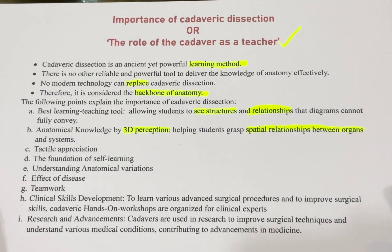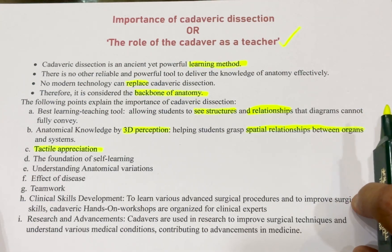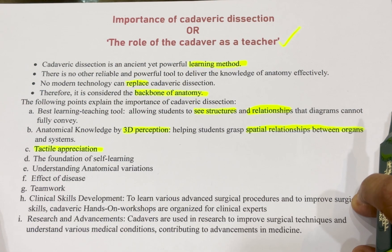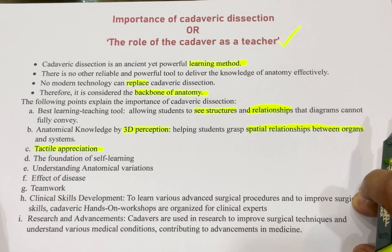Another important point is tactile appreciation. When you are doing dissection, it helps you first overcome the hesitation to touch a body, which is also helpful in clinical practice. Additionally, through tactile appreciation you are able to use your fingers to differentiate between arteries, nerves, veins, and tendons. All these tactile appreciations are very helpful.